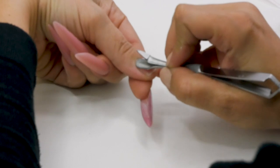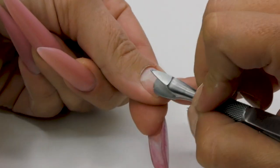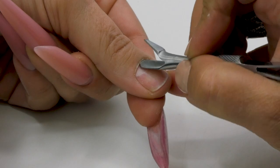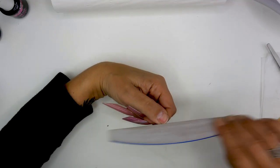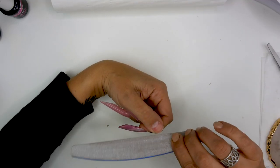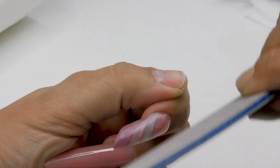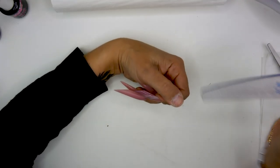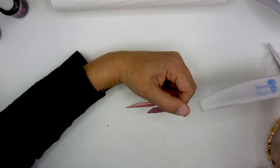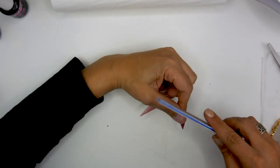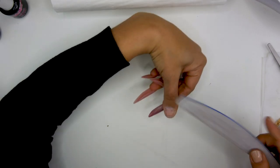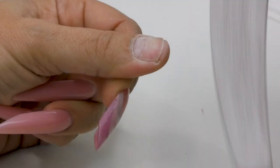First, I'm going to prep my nail. So I push back the cuticle and I'm going to remove the length of my free edge. And with a 180 grit file, I'm going to remove the shine of my nail.